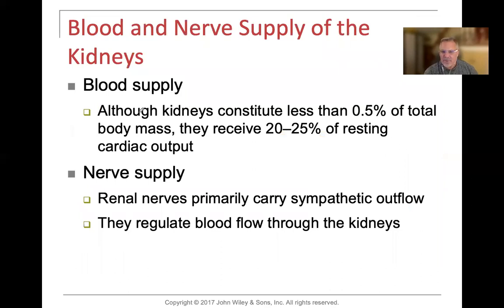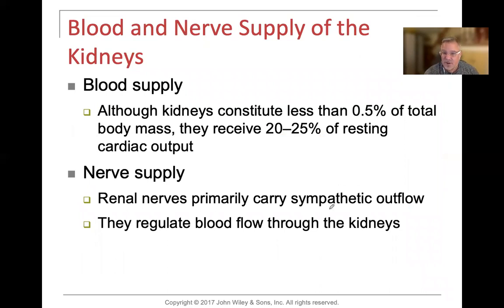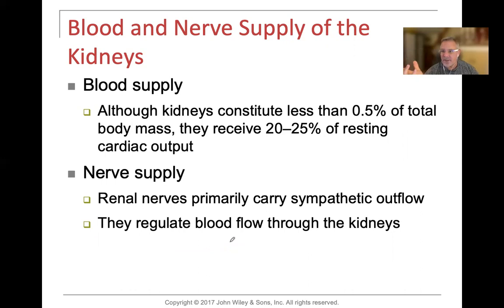Regarding blood supply: although the kidneys constitute less than 0.5% of the total body mass, they receive about a quarter of the resting cardiac output — that's pretty significant. The nerve supply is the renal nerves, which carry sympathetic outflow — the fight or flight response. The sympathetics can regulate blood flow through the kidneys by either dilating or constricting the renal artery and even the afferent and efferent arterioles.